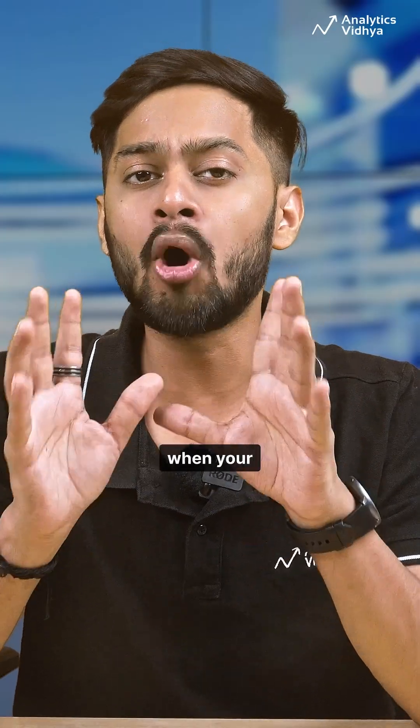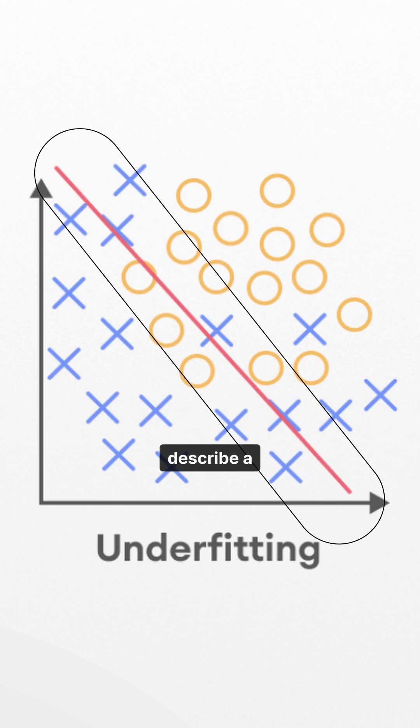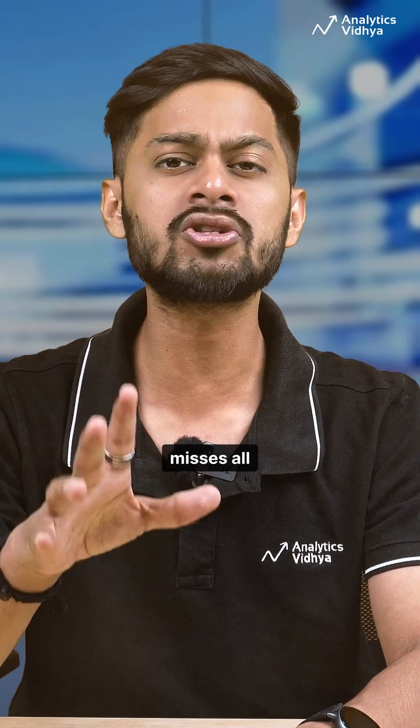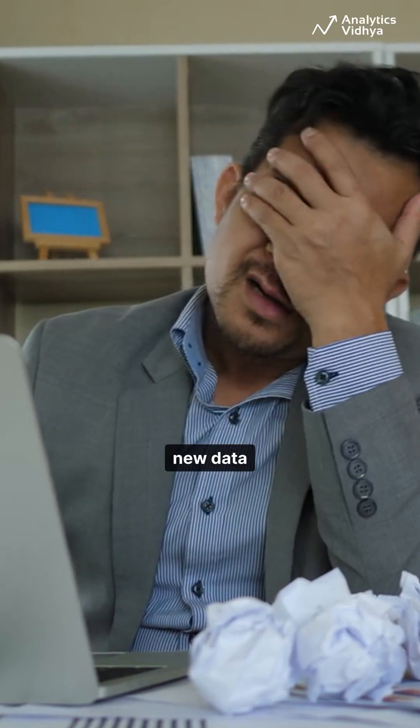Avoid underfitting and overfitting. Underfitting happens when your model is way too simple. Imagine using a straight line to describe a roller coaster. Your model misses all the twists. The result: poor prediction on both your training and new data.